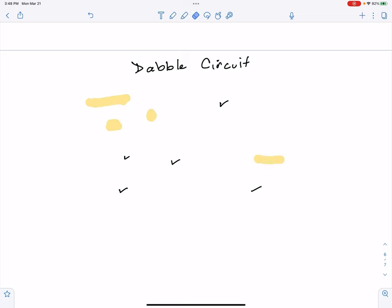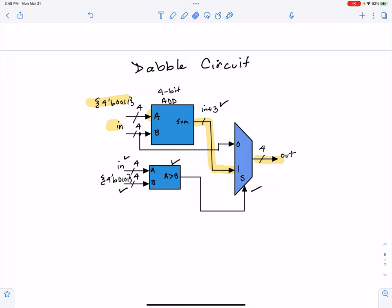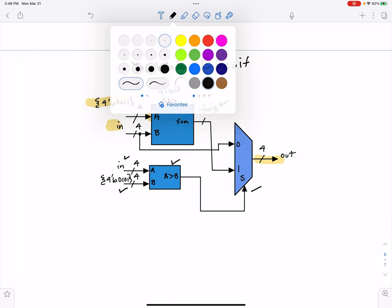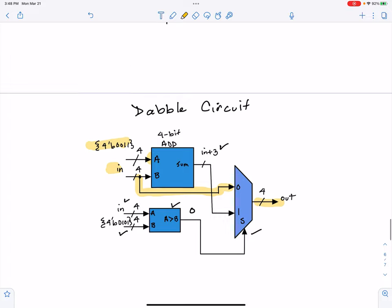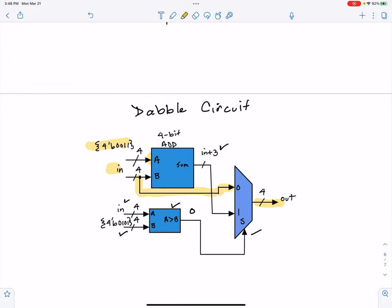If we had a smaller number, if we had, say, for example, n was equal to 3, then this signal coming out would be a 0, and we'd select the 0 line, and n would go on through the output. So you can envision the dabble circuit. And we're going to put this all together in the next video to do a double dabble algorithm.